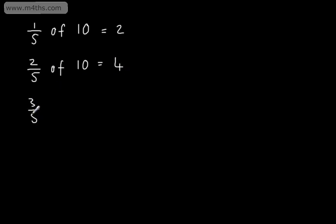So, if I wanted 3 fifths, I would now simply find 1 fifth, which is going to be 2, and multiply my answer by 3, which is going to be 6.